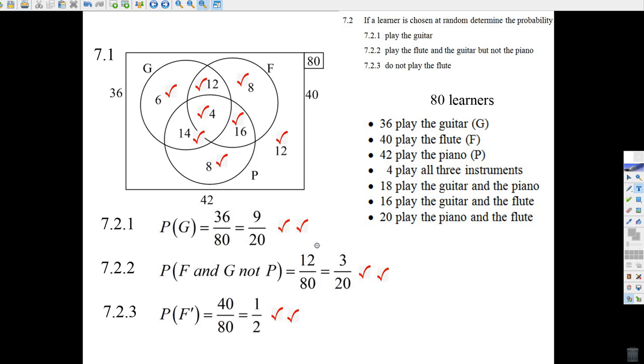Now, the probability is pretty easy. What's the chance that somebody's going to play the guitar? You don't need the Venn diagram because you already know there's 36 people out of 80 in total. So you could get two marks even if your Venn diagram is totally messed up.